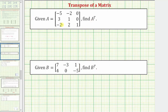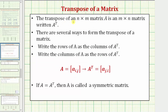Welcome to two examples on how to find the transpose of a given matrix. The transpose of an n by m matrix A is an m by n matrix, written as A transpose, where we have a capital A and a superscript of capital T. There are several ways to form the transpose of a matrix. One way is to write the rows of matrix A as the columns of A transpose, or we can write the columns of matrix A as the rows of A transpose.